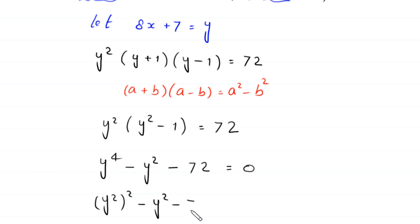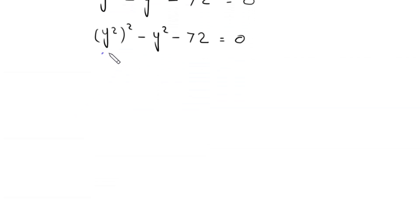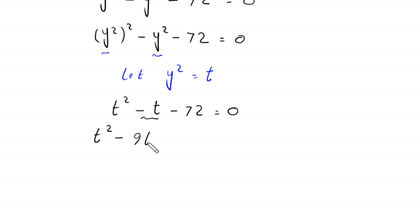Now suppose y² equals t. The equation becomes t² − t − 72 = 0. This is a factorable quadratic. We write t² and break −t into −9t + 8t, giving t² − 9t + 8t − 72 = 0.